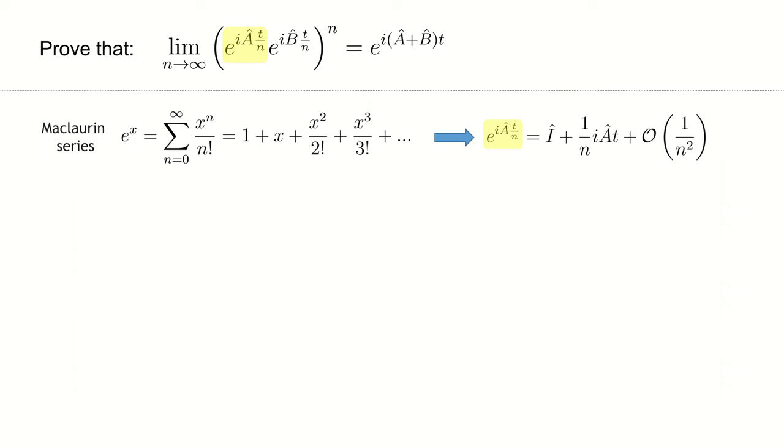We apply this formula to the exponent with an operator A and discard anything that grows faster than 1 divided by n squared.